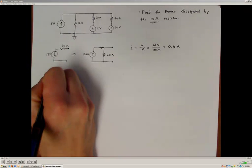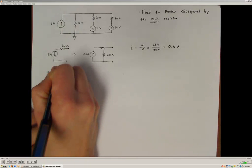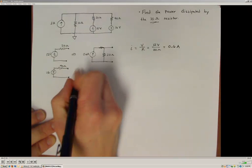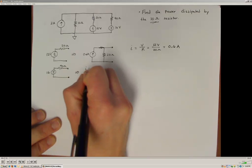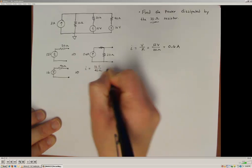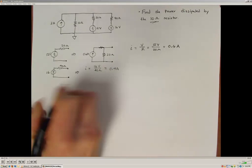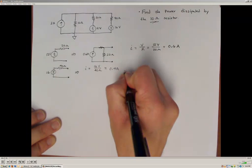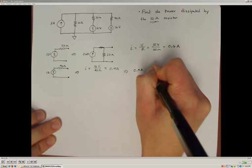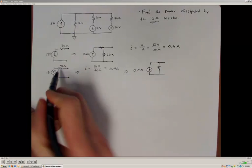I can do the same thing with the 16 volt supply, which is in series with a 40 ohm resistor. The current supply value is 16 volts divided by 40 ohms, which gives 0.4 amps. So the 16 volt supply is equivalent to a 0.4 amp current source in parallel with a 40 ohm resistor.